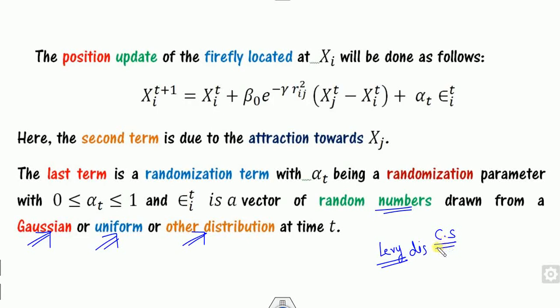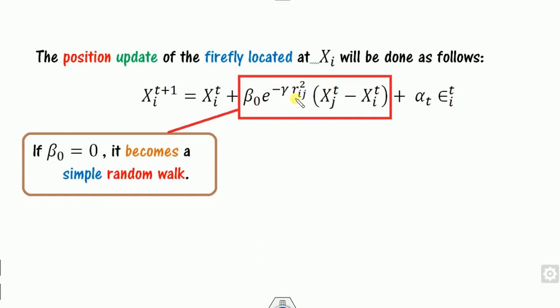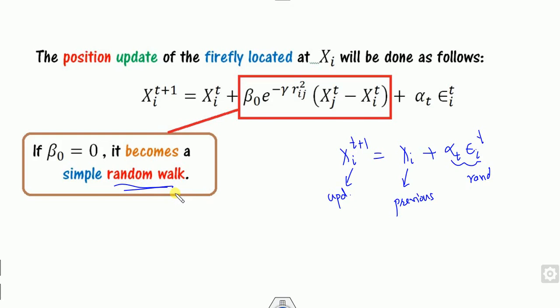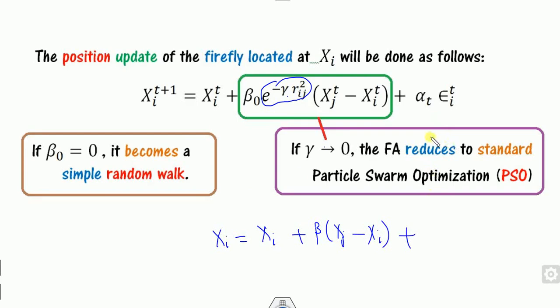The update equation has the previous position plus the attractiveness term plus the random term. If my initial beta-naught is zero, the equation reduces to the previous position plus a random number — this is nothing but a simple random walk. On the other hand, if gamma is zero, then the exponential term becomes one, and the update equation becomes beta times (xj minus xi) plus the random factor, which reduces to the standard PSO.